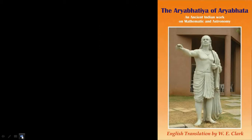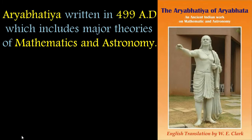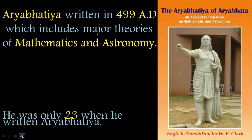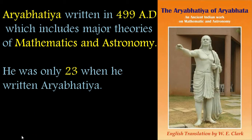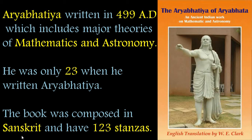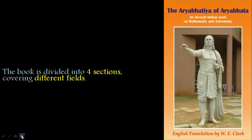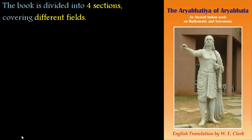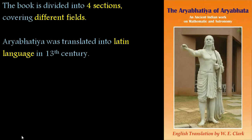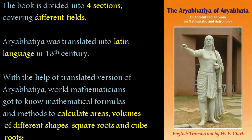One of his major works is his book Aryabhatya, written in 499 AD, which includes major theories of mathematics and astronomy. He was only 23 when he wrote Aryabhatya. The book was composed in Sanskrit and has 123 stanzas. The book is divided into four sections covering different fields. It was translated into Latin in the 13th century. With the help of the translated version, world mathematicians got to know about mathematical formulas and methods to calculate areas, volumes of different shapes, square roots, and cube roots.